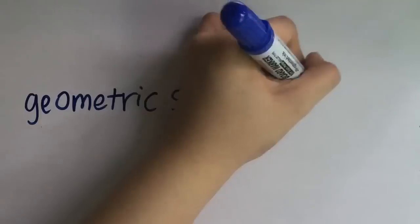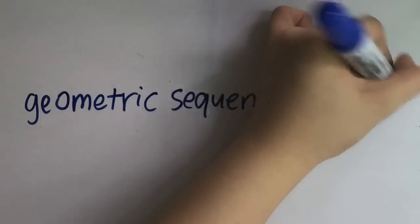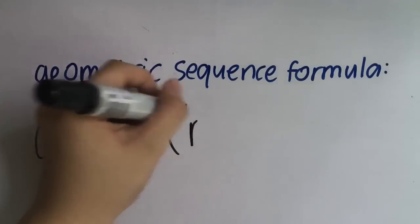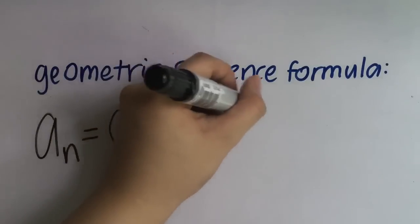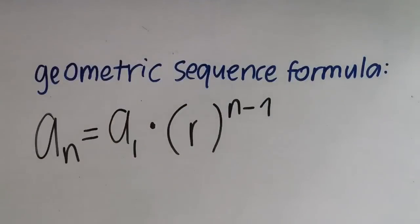The geometric sequence formula is: a sub n, being the nth term or the term you are looking for, is equal to a sub 1, being the first term, multiplied by r, the common ratio, raised to n minus 1.